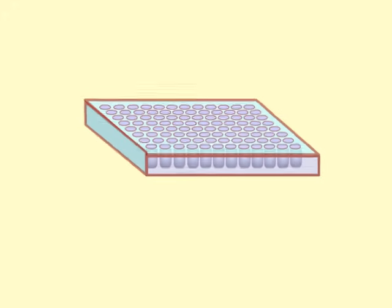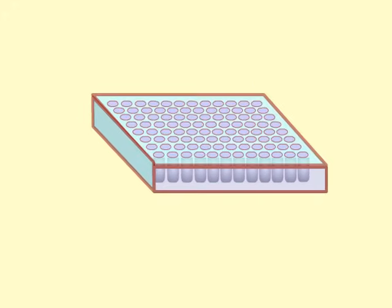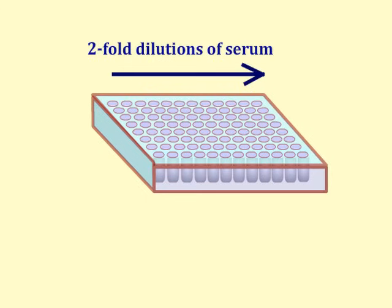The development of color in the wells with a specific antibody can be seen with the naked eye or quantified with an electronic plate reader.